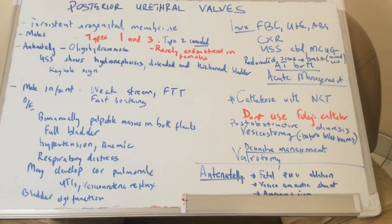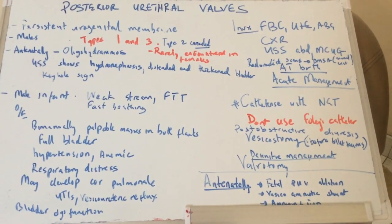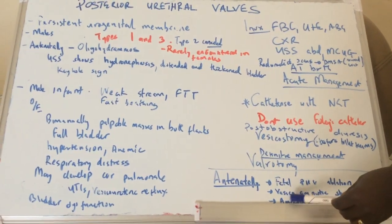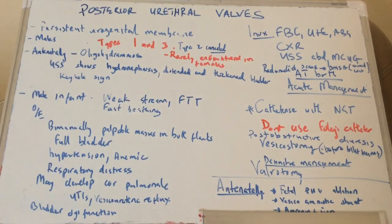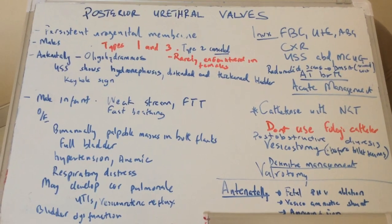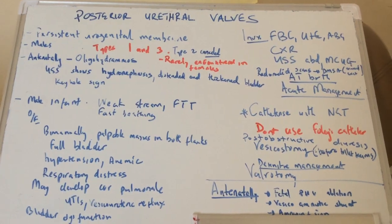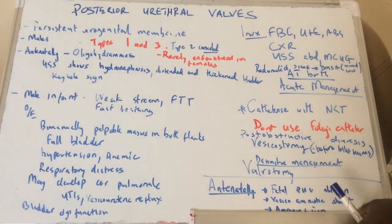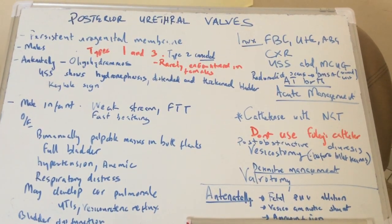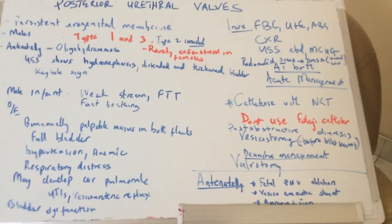In some advanced centers, posterior urethral valves can actually be treated antenatally with a fetal posterior urethral valve ablation. A vesico-amniotic shunt can also be done, where a shunt is connected to the bladder to drain fluid into the amniotic fluid. The downfall is that kidney function is not necessarily resolved, but it helps with the development of the lungs. Amnioinfusion can also be performed to increase the amount of amniotic fluid, helping the lungs develop better in the setting of oligohydramnios.